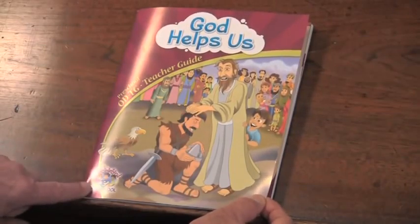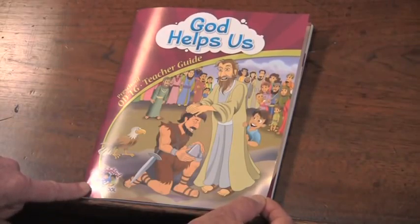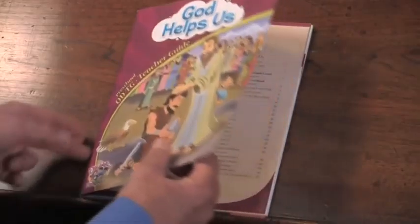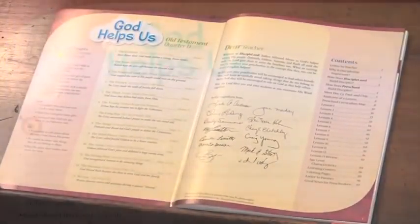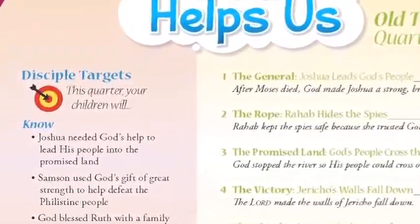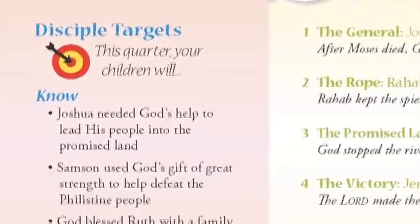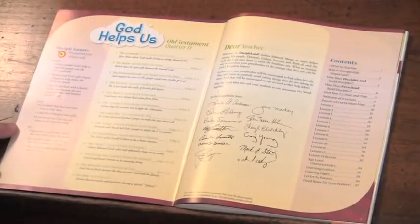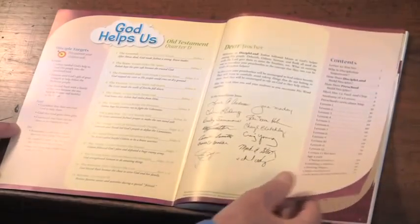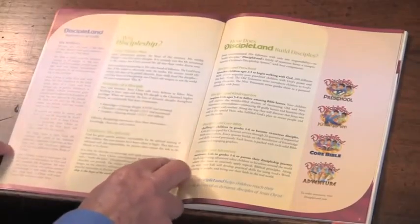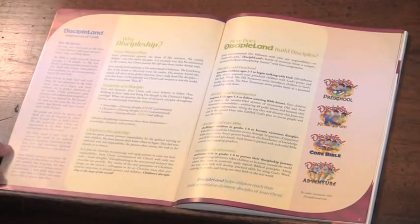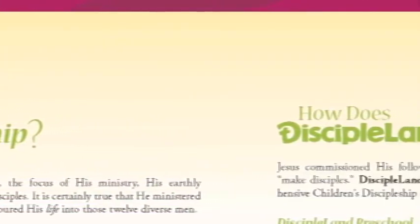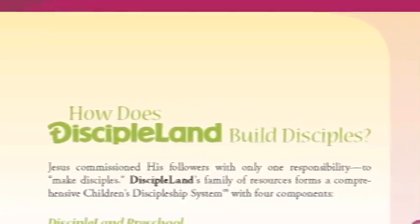We're going to take a look at DiscipleLand's preschool curriculum. What you see right now is the cover of one of the Old Testament teacher guides. You really want to take a look at the two inside cover pages, because that's going to give you information about the disciple targets — what are we aiming for them to know, to feel, and to do during the quarter. The rest of the information in these first two pages tells you where we're going and what we're doing during the quarter. The next couple of pages will introduce you to what we believe about discipleship and how we build disciples through the curriculum.